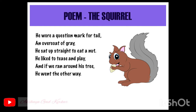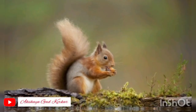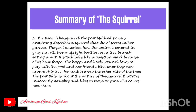Now let's analyze the poem. The poet has drawn a living picture of the squirrel through her poem. Look at the picture of the squirrel on the screen. The poet describes how the squirrel is covered in grey fur and sits in an upright position on a tree branch, eating a nut. Its grey fur looks very similar to a grey overcoat. Its tail looks like a question mark. The happy and lively squirrel loves to play with the poet.